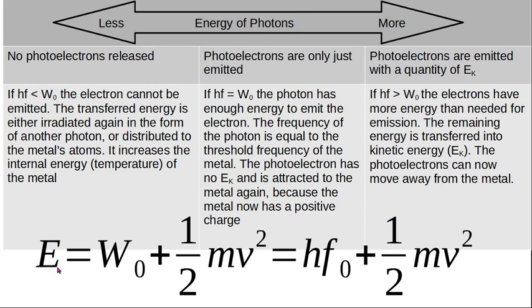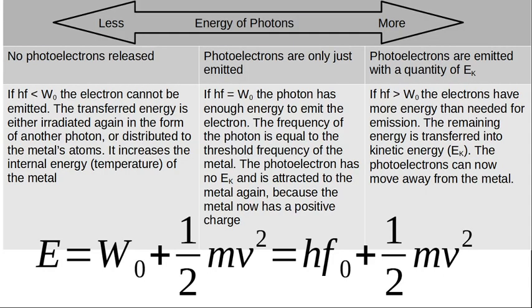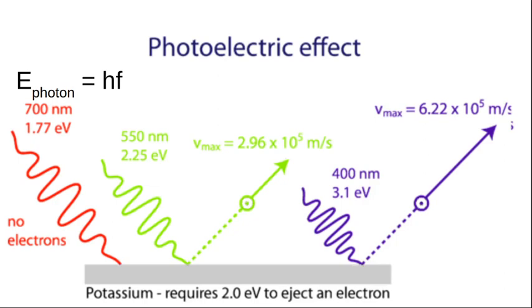Here is that equation again: E equals W0 plus Ek max. But we've left the W0 and turned the Ek max into a half mv squared. Or here is its other alternative: Planck's constant times the threshold frequency plus the kinetic energy. So these are all basically just substituting other things into this expression here. E equals W0 plus Ek max. W0 is hf0, Ek max is a half mv squared. And obviously those are all on your data sheet, those formulas.